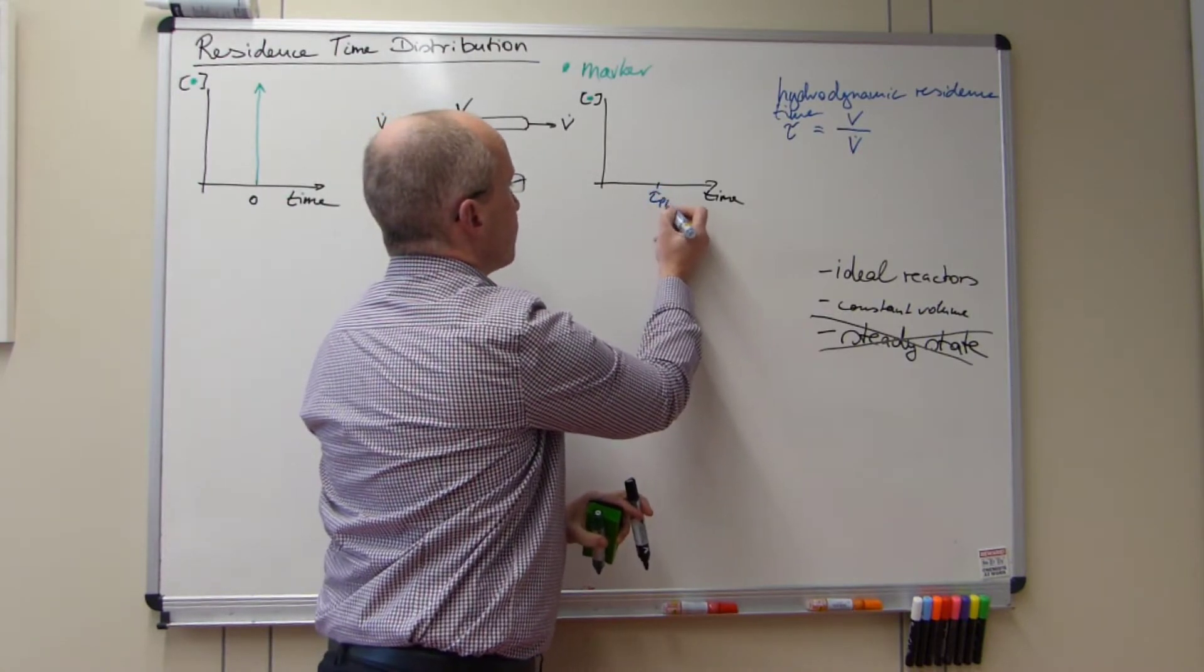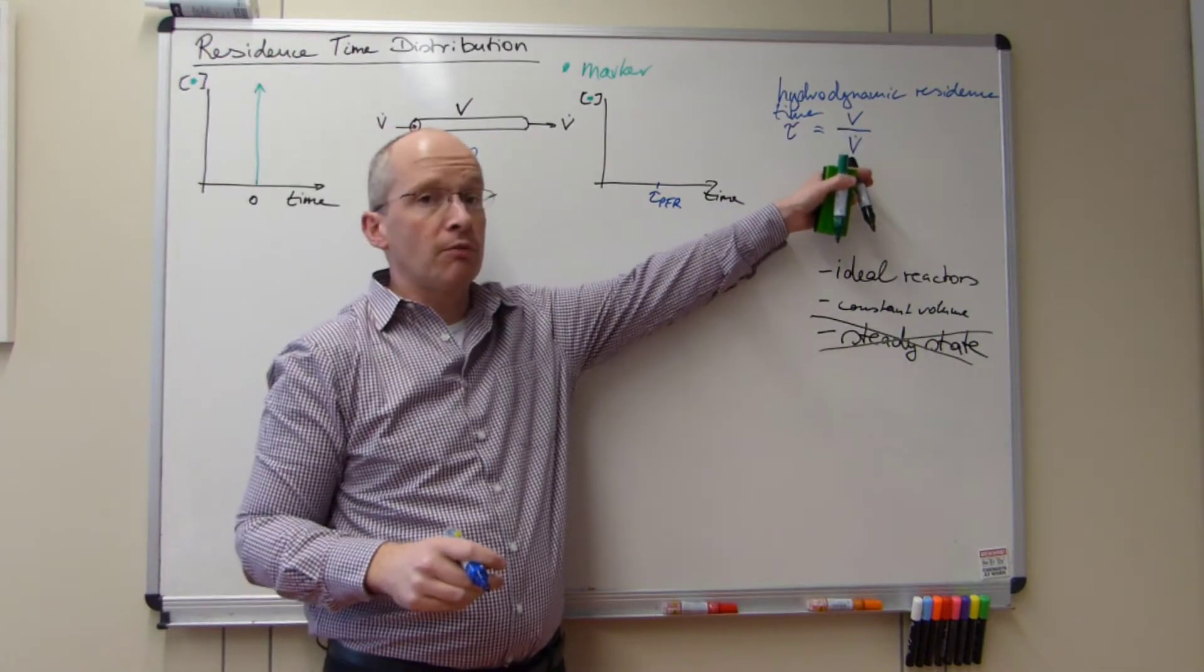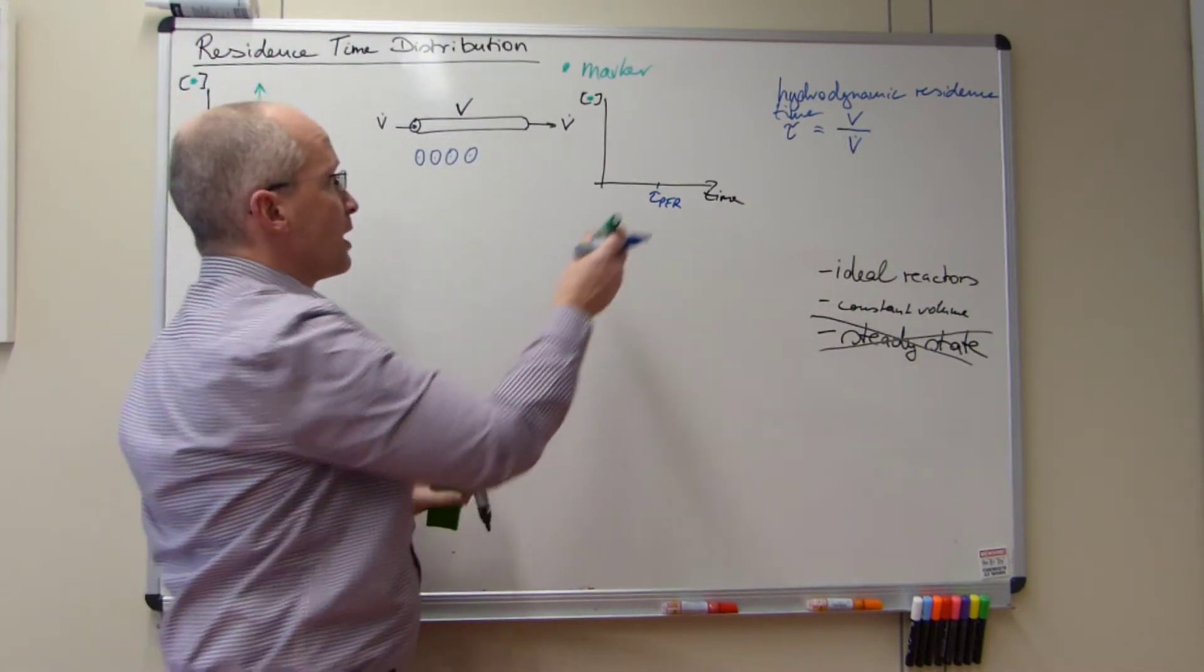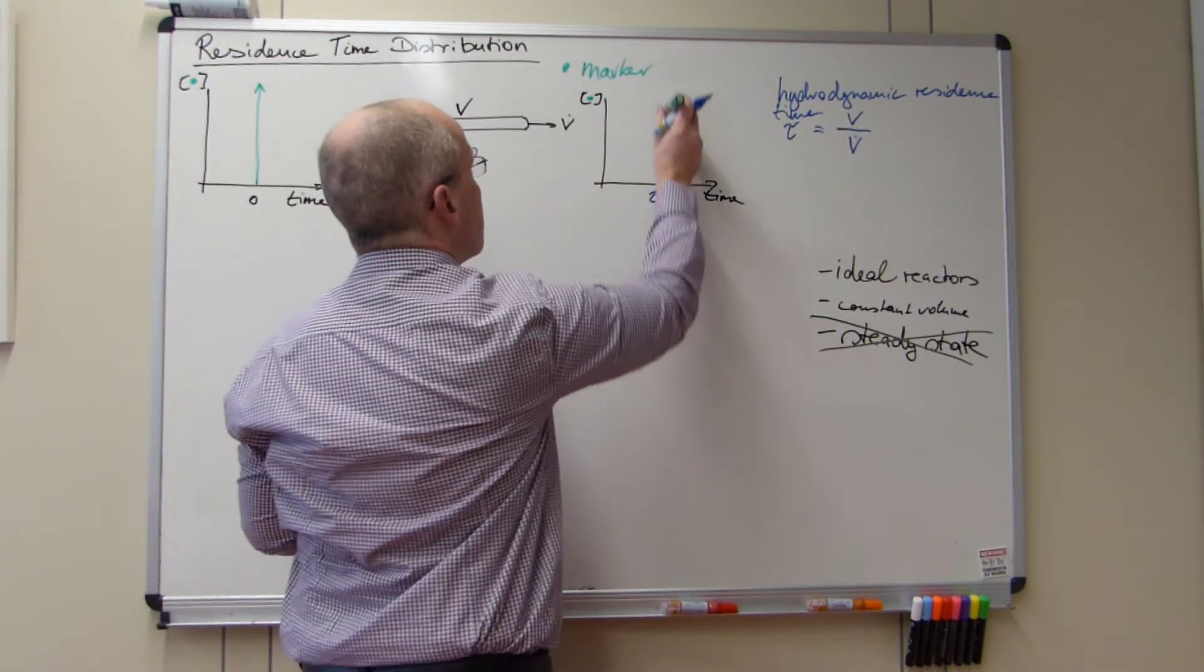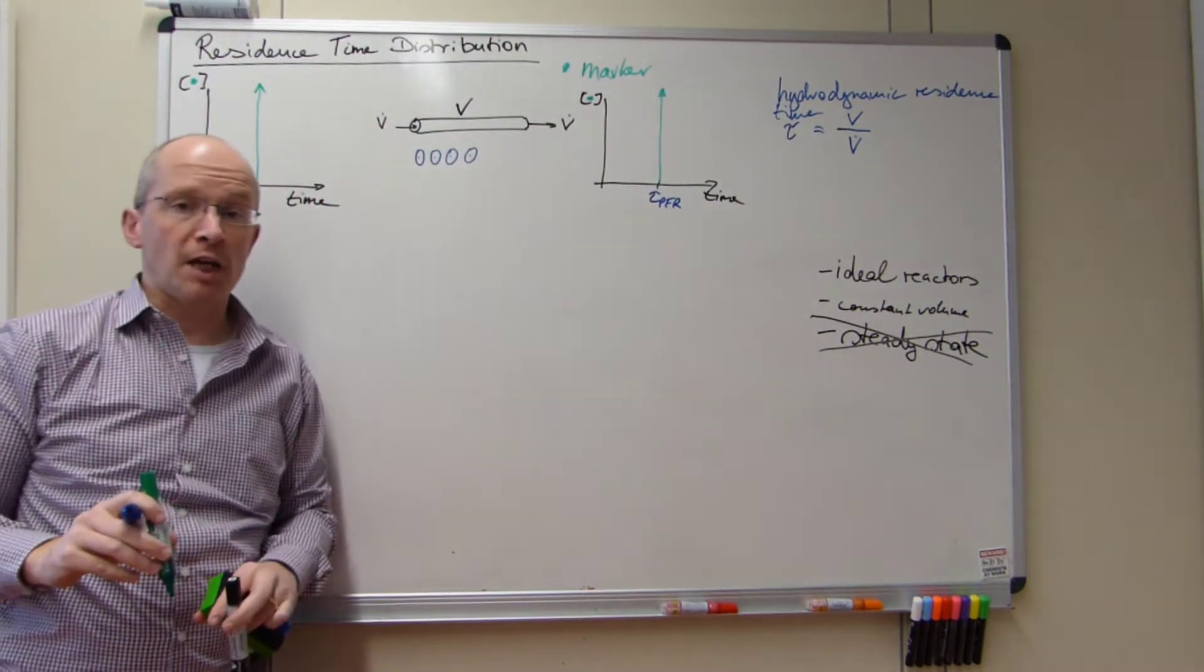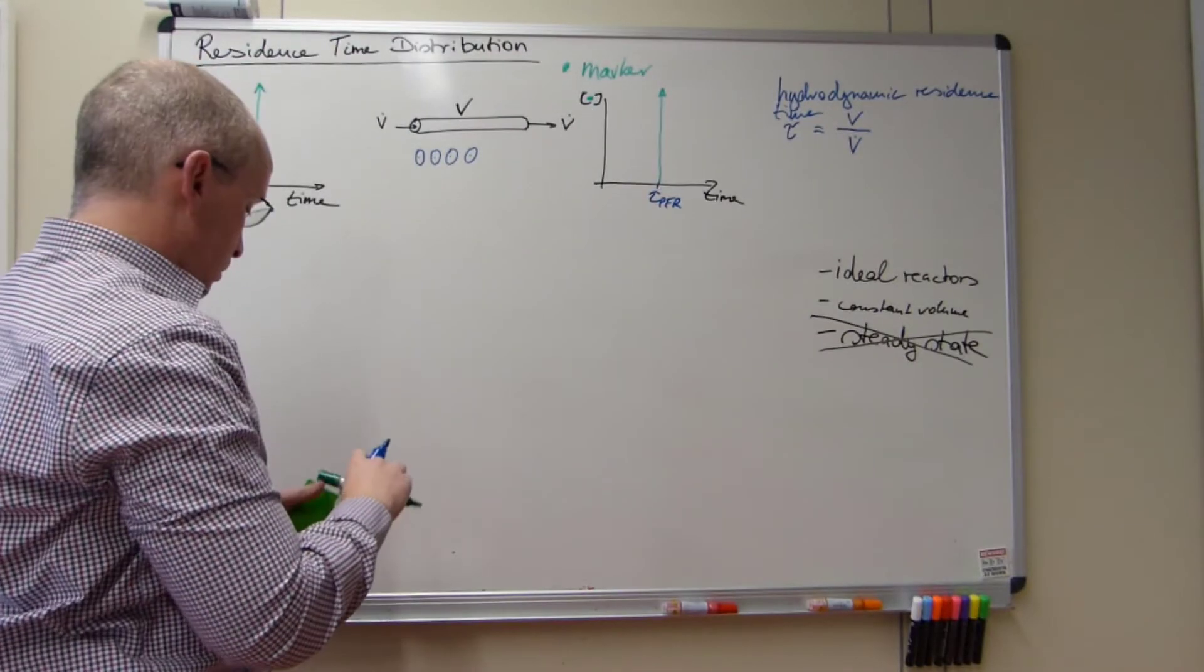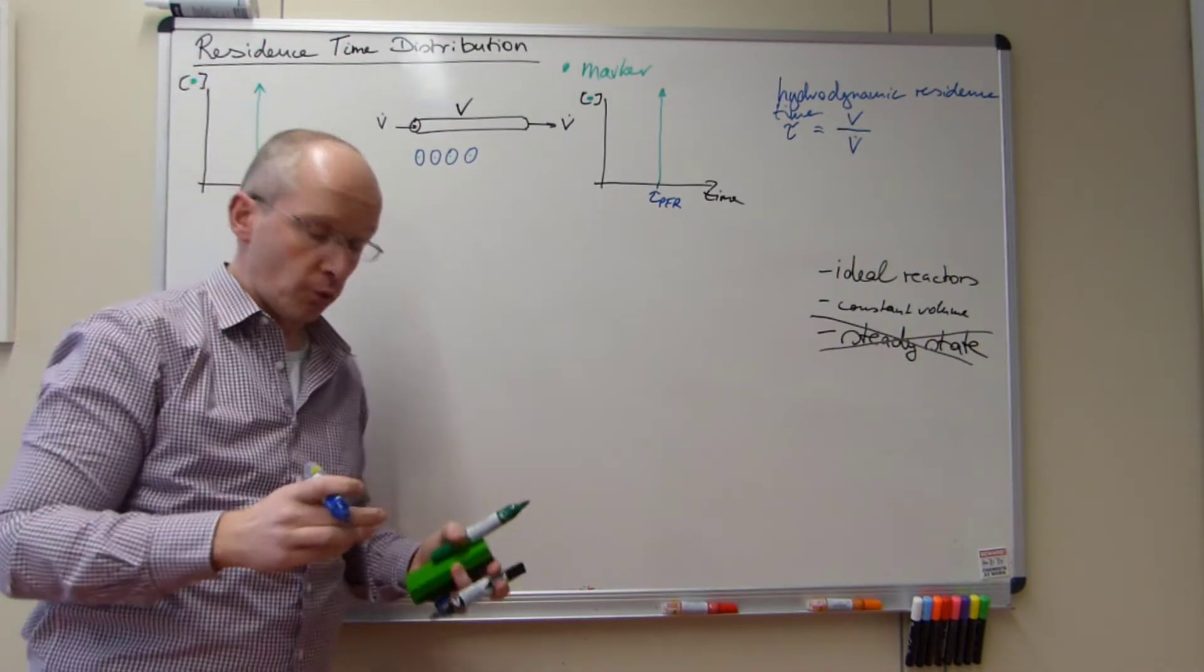So this is the residence time of our plug flow reactor. Here tau PFR as defined as volume divided by volume flow. And there we will see it all again, all at once. That's all kind of time machine here which will act on that. So that's the one of the two reactors.